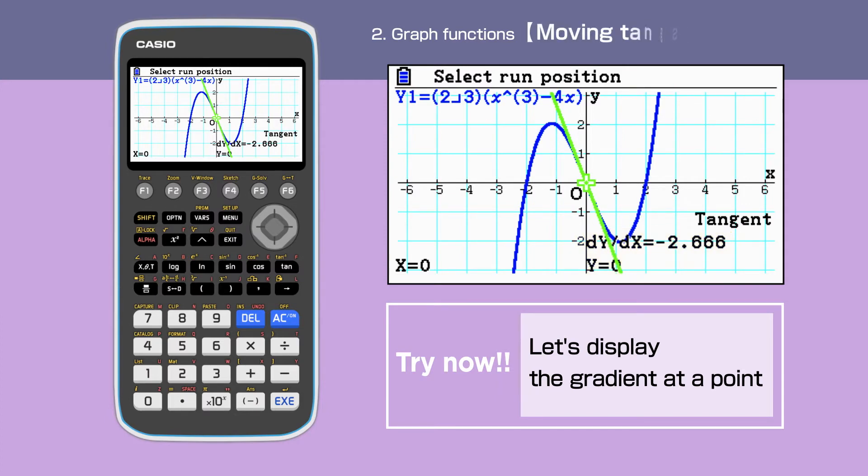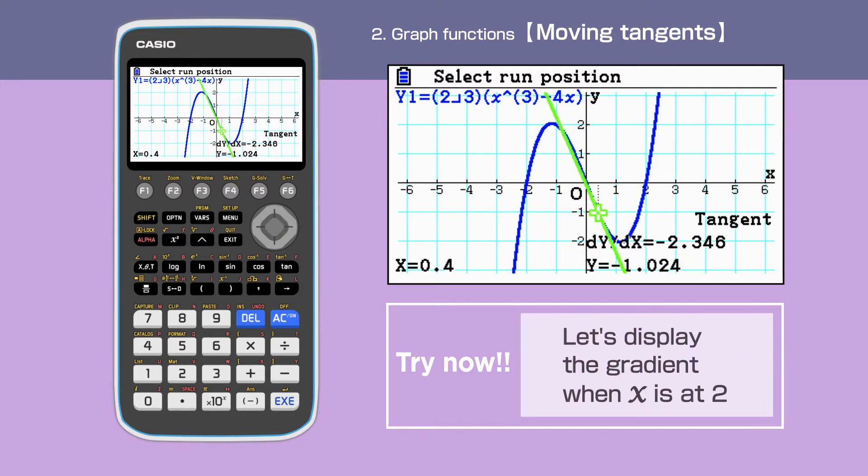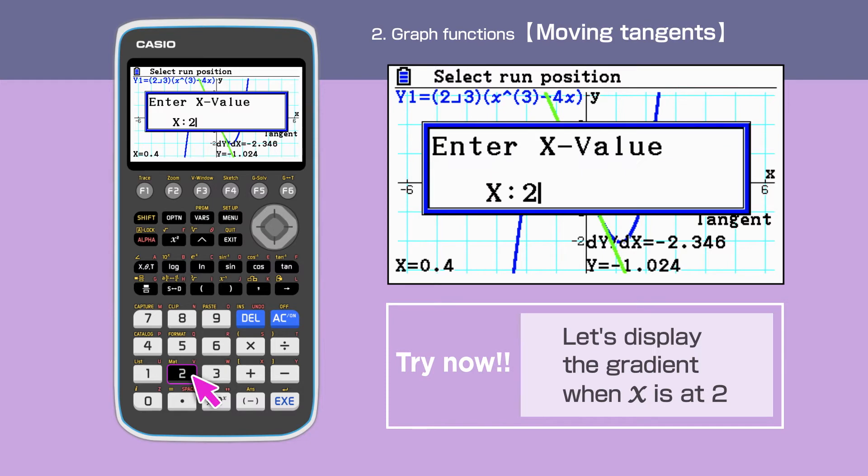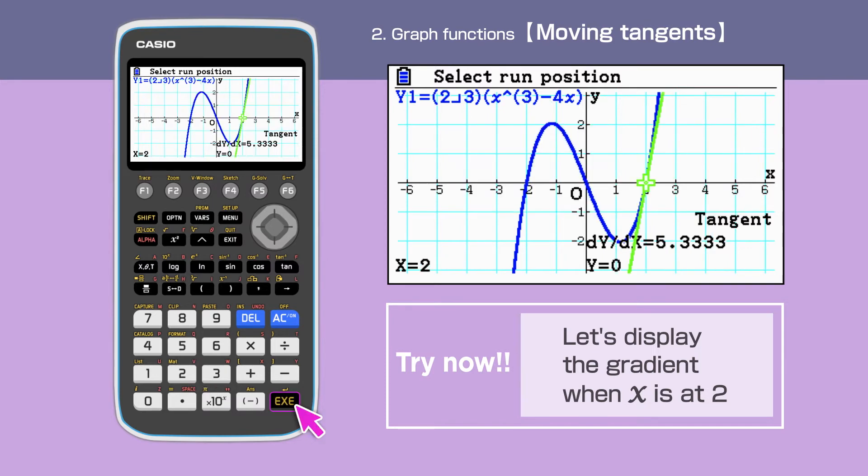The tangent line can be moved along with the original function by moving the cursor. In addition, we can draw a tangent at the specific point when x coordinate is given. Let's draw a tangent when x is at 2. We only need to enter 2 and execute in our calculator. The tangent is drawn at x equals 2.